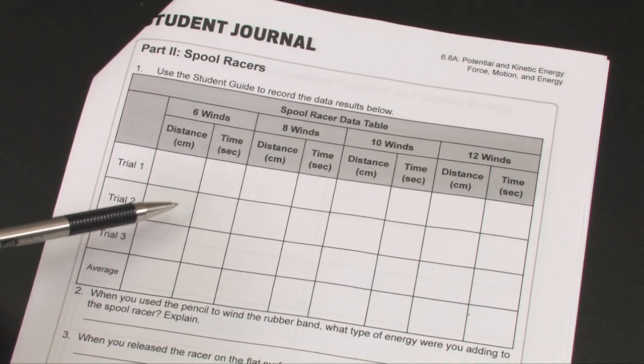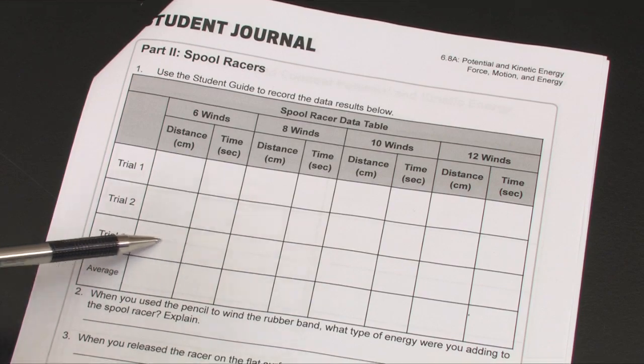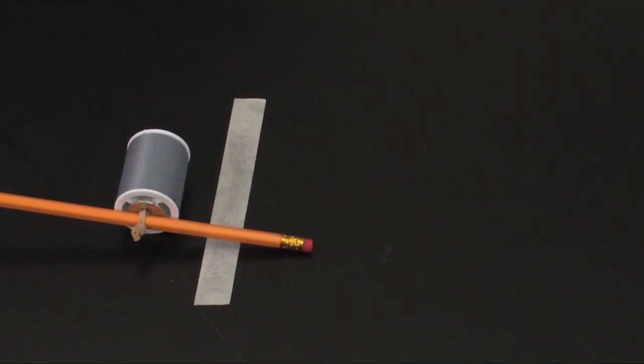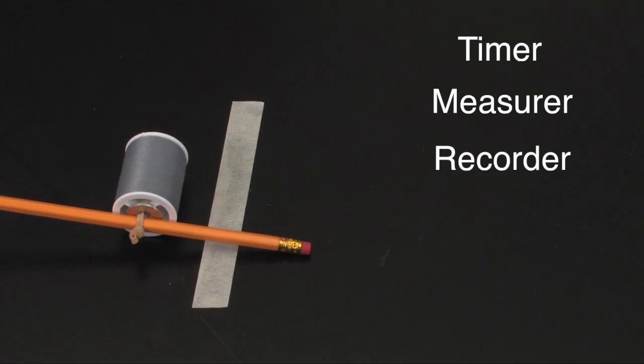Students will now collect and record data on the spool racer data chart in their student journal. Students will divide jobs between group members as follows: Timer, Measurer, Recorder, and Racer.